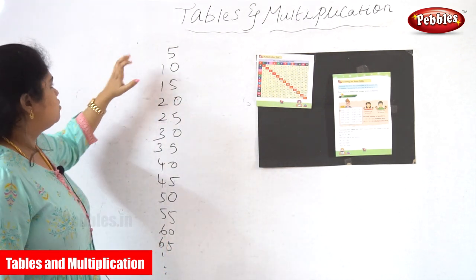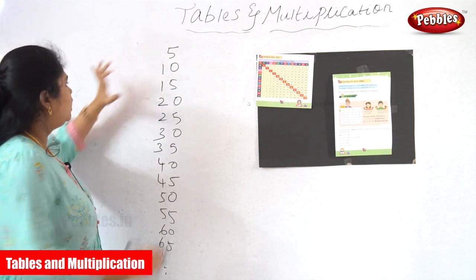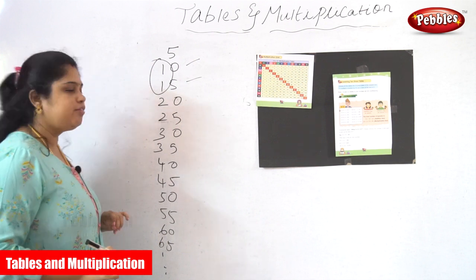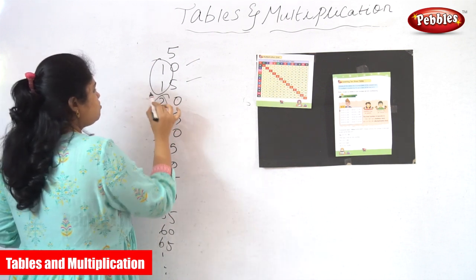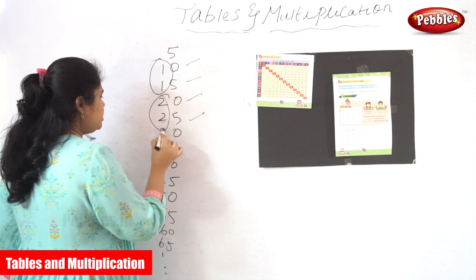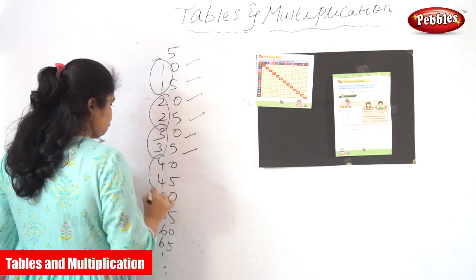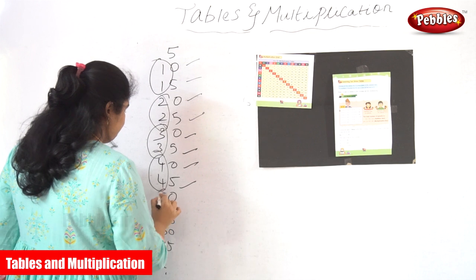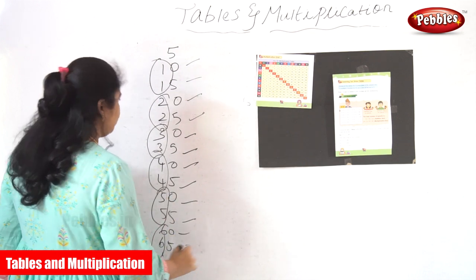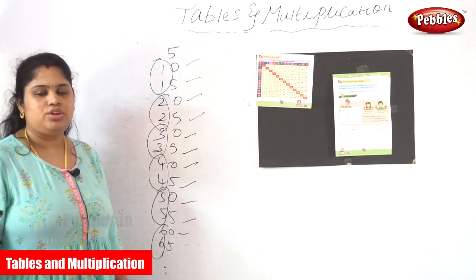Now you can understand. The 5 tables means we start at 5. 1, 2 times — the 1st one will be 0 and the 2nd one will be 5. Next, 2 two times — 1st one will be 0 and 2nd one will be 5. Next, 3 two times: 0 and 5. 4 two times: 0 and 5. 5 two times: 0 and 5. 6 two times: 0 and 5. So this is how the 5 tables actually work.